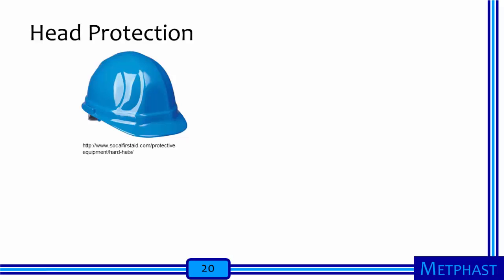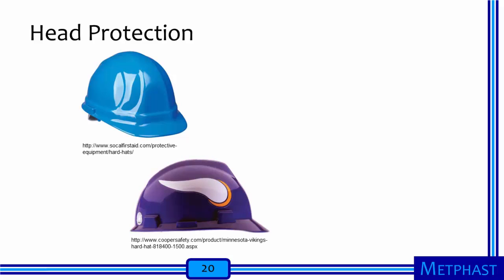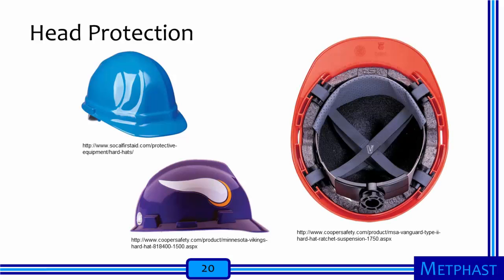This image shows an ordinary Type 1, Classes C, G, and E hard hat. Type 1 hard hats can also be customized for workers, like one that looks like a Minnesota Vikings football helmet. This is an image of the inside of a Type 2 hard hat. We see the suspension system that provides shock absorption for impacts from above—present in both Type 1 and Type 2—and around the circumference, the extra padding that provides protection from lateral impact, which is only present in Type 2 hard hats.